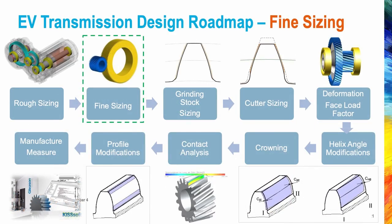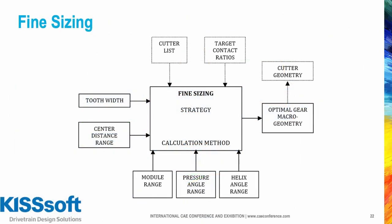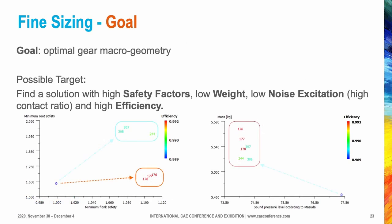The basic idea of fine sizing is to start with a fixed width and center distance range and find the optimal gear micro geometry. We can fix module range, pressure angle range, and helix angle range — noting we may not want too high a helix angle due to axial forces on bearings. Very importantly for NVH, we can fix a target contact ratio. Multiple targets are possible: higher safety factors, low weight, high contact ratio for low noise excitation, or high efficiency.